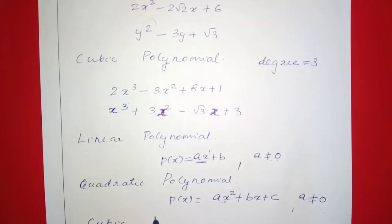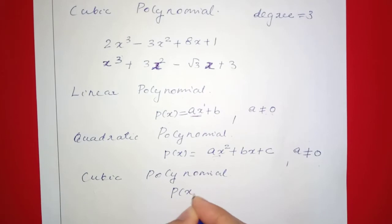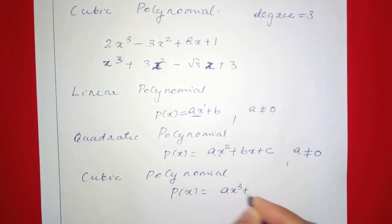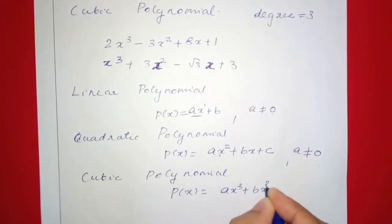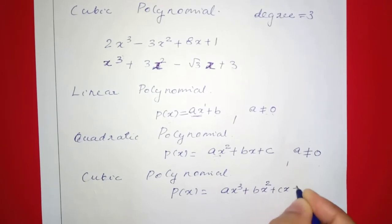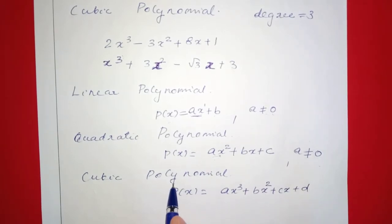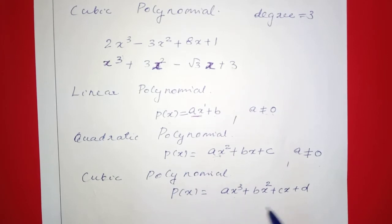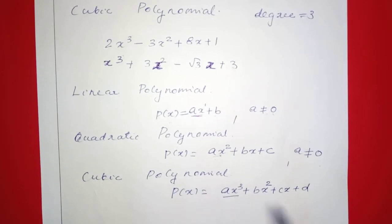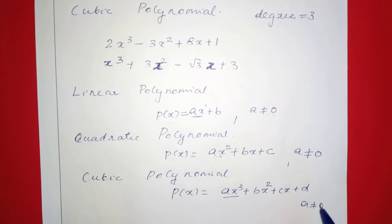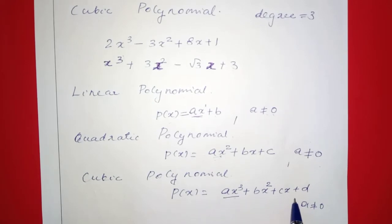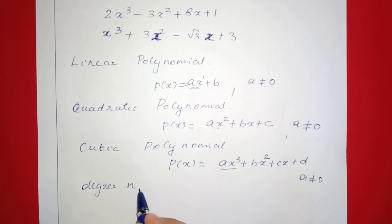What is the general form of a cubic polynomial? P of x is equal to ax raised to 3 plus bx squared plus cx plus d. In a cubic polynomial, the degree is 3, meaning x has the highest power of 3. So a is not equal to zero, and a, b, c, and d are any real numbers.